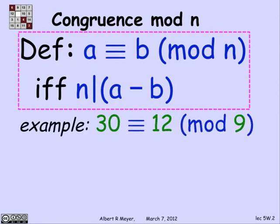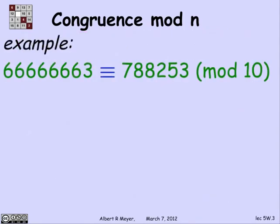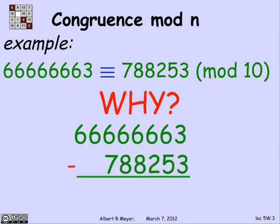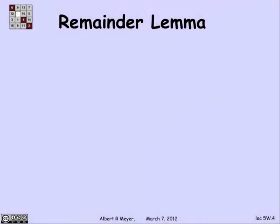30 is equivalent to 12 mod 9 because 30 minus 12 is 18, and 9 divides 18. An immediate application is that a large number ending in 3 is equivalent to 788253 modulo 10. If you think about subtracting the two numbers, you just look at the low order digits. When you subtract these, you get a number that ends in 0, which means it's divisible by 10. It's very easy to tell when two numbers are congruent mod 10 because they just have the same lower digit.